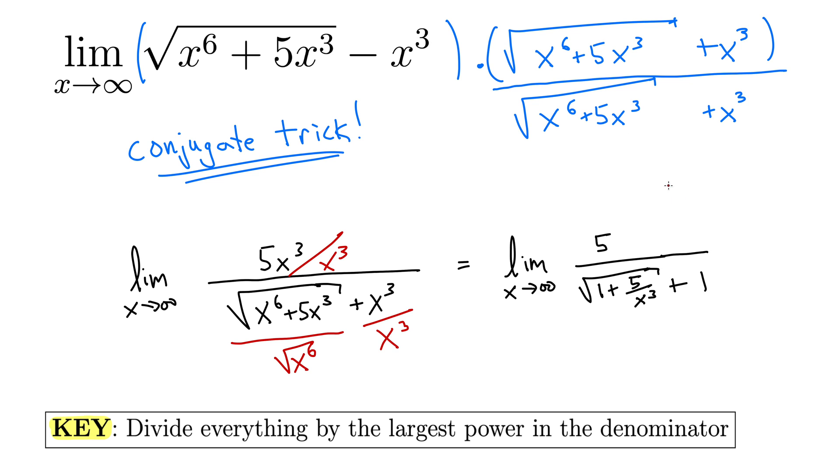Well, as that x goes to infinity, this 5 over x cubed term will go to 0. So this whole thing evaluates to 5 over 1 plus 1, which is 5 halves. And that is the final answer.